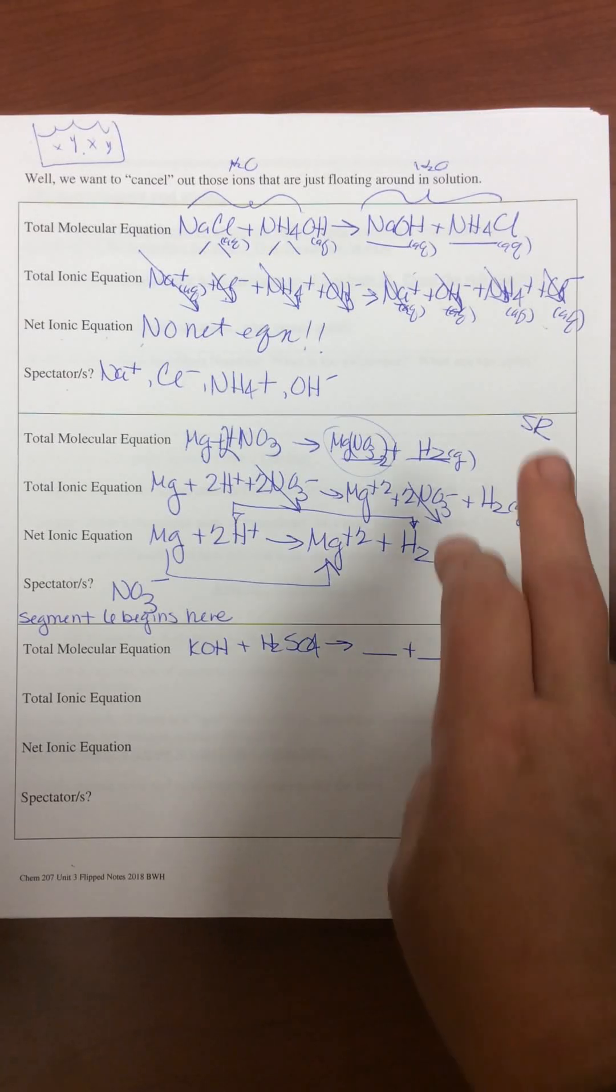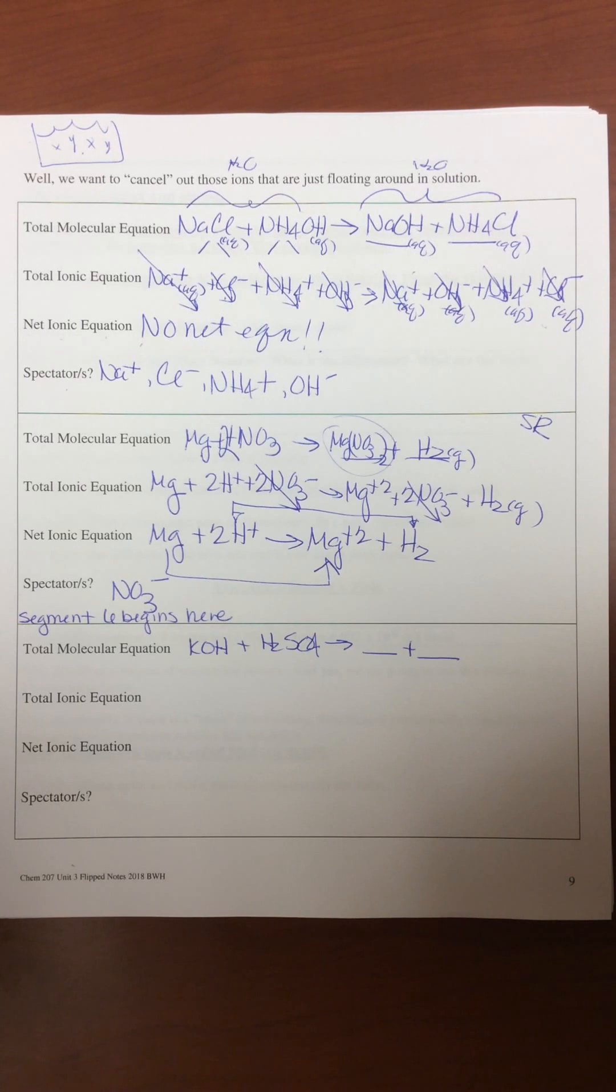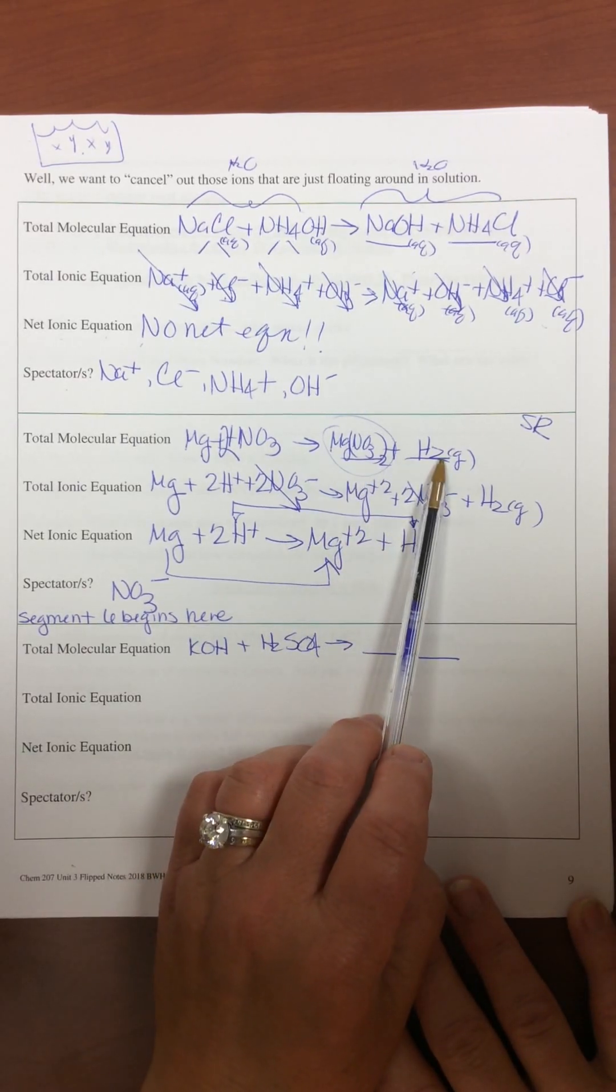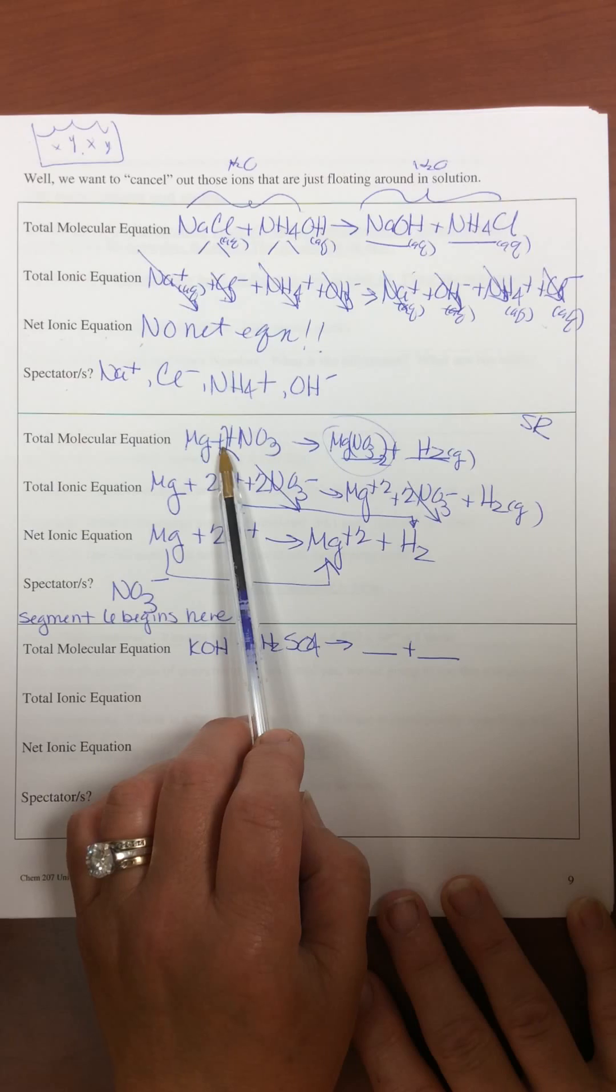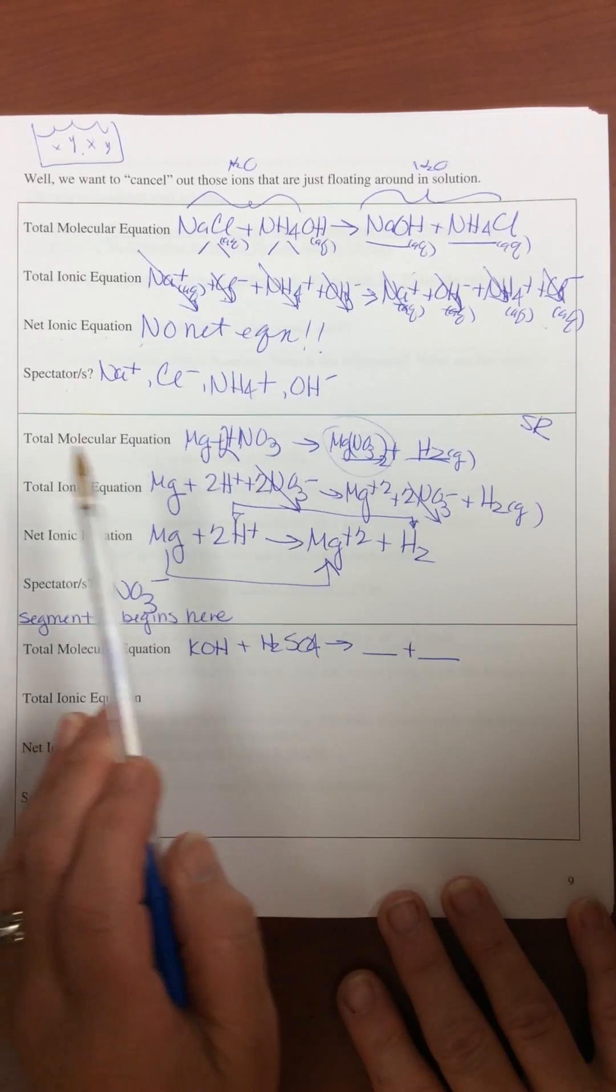In the last segment, we talked about net ionic equations and the fact that this is new. So you're going to need to predict your products and write your balanced equation, and then ask yourself, well what is the nature of my substance?